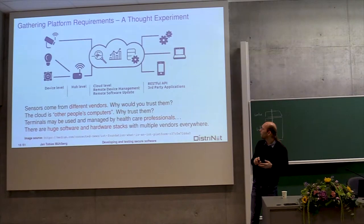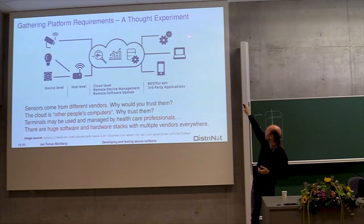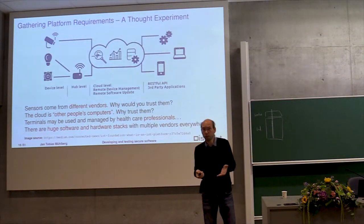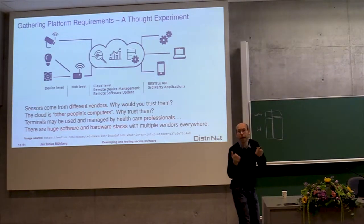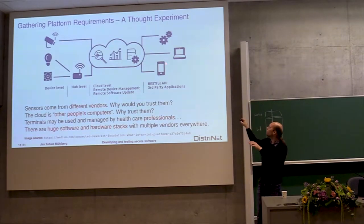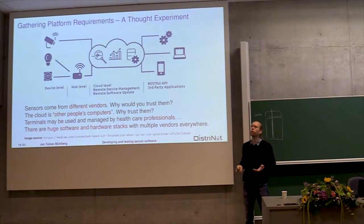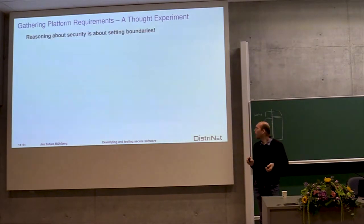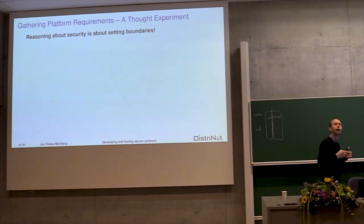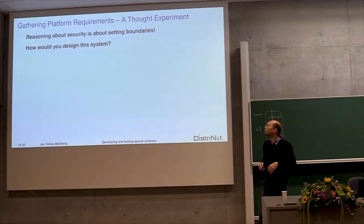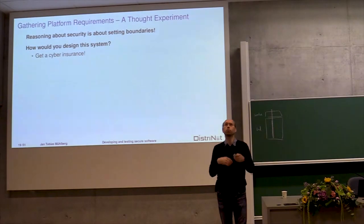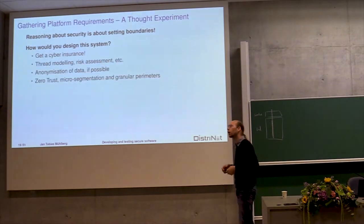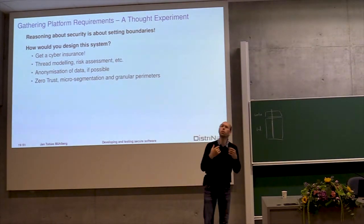Let's think about a scenario where you might want to employ trusted computing. You see there are different vendors, other people's computers in the middle, and healthcare professionals who are certainly not security experts. You end up with a huge stack of hardware and software, most of which you can hardly assess in terms of security. What boundaries would you have to define? Obviously one idea is to buy insurance, but that doesn't help people. We have to get to approaches involving threat modeling, anonymization of data, and zero-trust concepts.